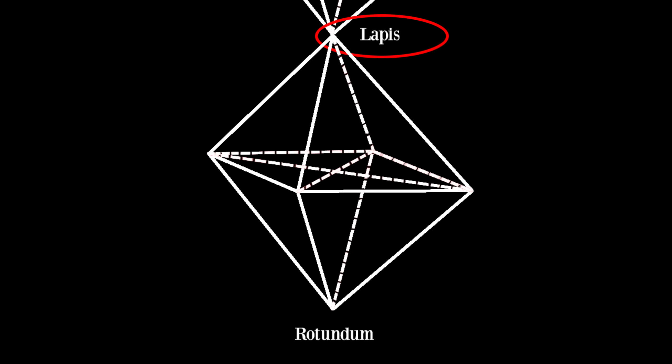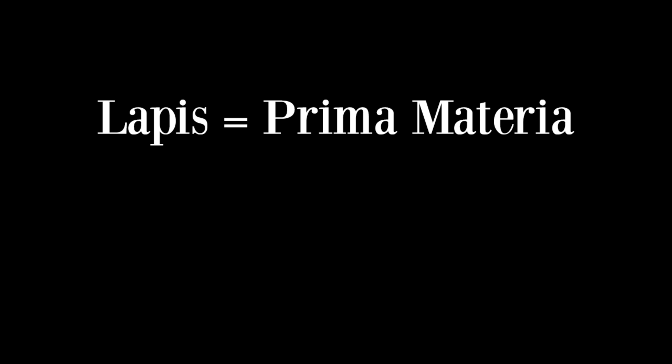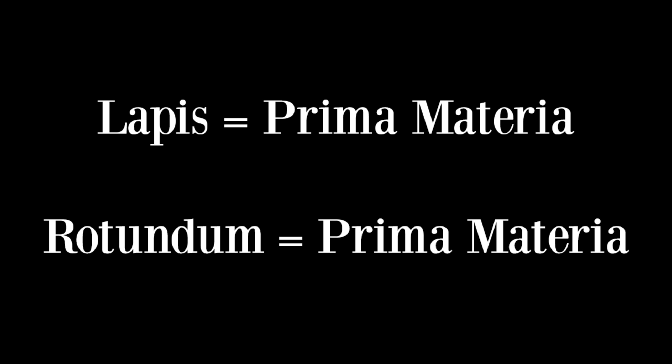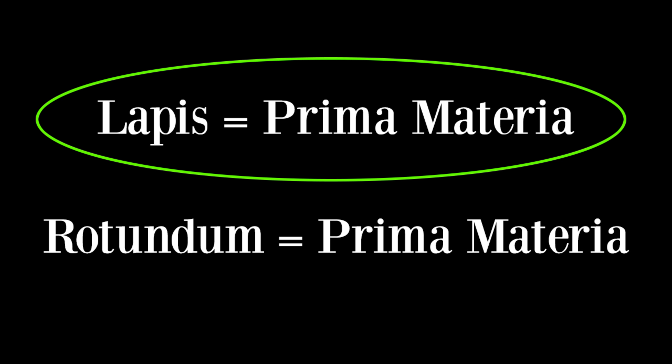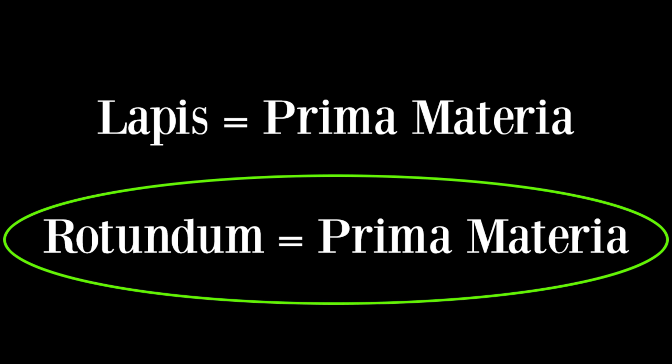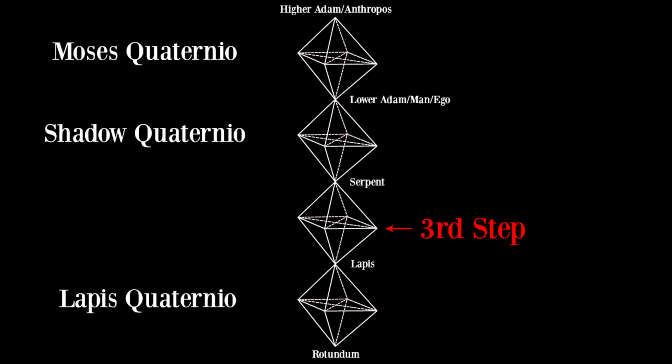The lapis is not the philosopher's stone, even though it is often referred to as the lapis philosophorum in Ion. It is merely the seed with which God brings the universe to life. The lapis is also referred to as the prima materia, except unlike the prima materia of the rotundum, the lapis represents a unity of the elements instead of a chaotic disunity.